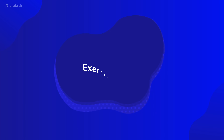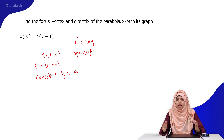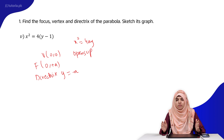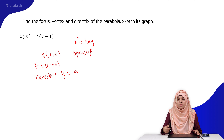We have discussed the general form of parabola equations. Question 1 is: find the focus, vertex, and directrix of the parabola. We need to find these elements and sketch the graph. Let's start with the equation.